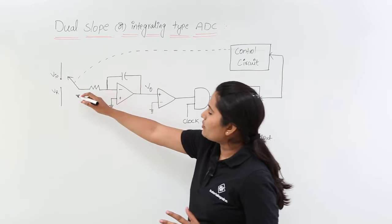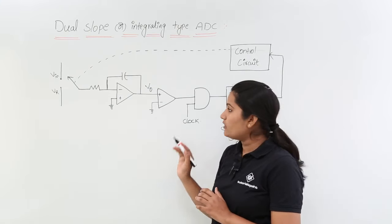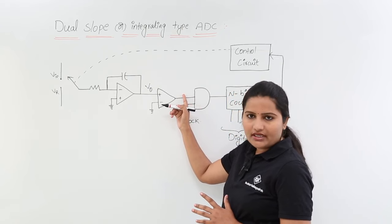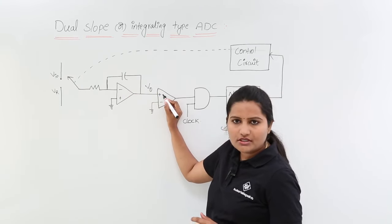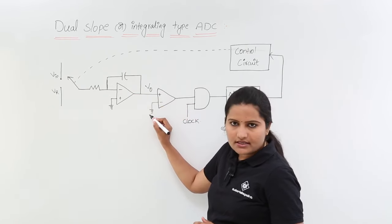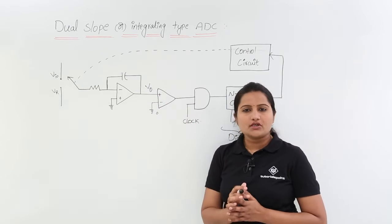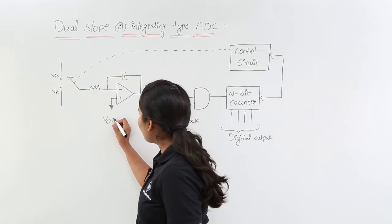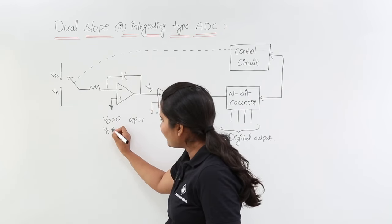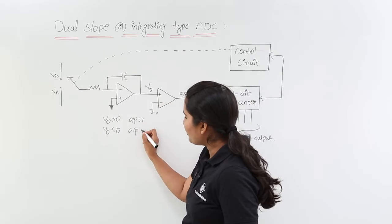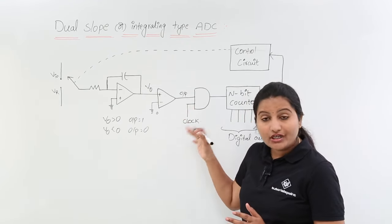This switch is controlled by the control circuit. Here you can observe a comparator — whenever V0 is greater than 0, then the output here is equivalent to 1. This V0 is given from the integrator output to the positive terminal of this op-amp, while the negative terminal is grounded. Whenever this positive voltage is greater than 0, the output of this op-amp is equivalent to 1. So whenever V0 is less than 0, the output is equivalent to 0. You can observe an AND gate which controls the clock signal.